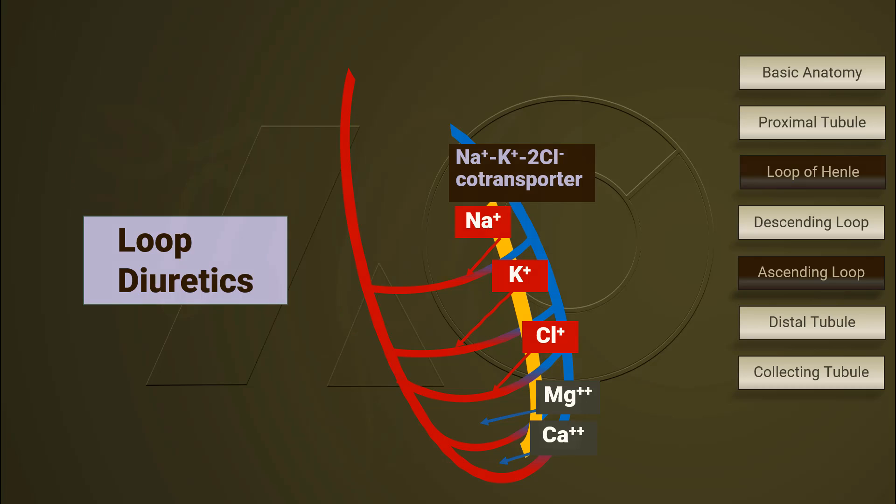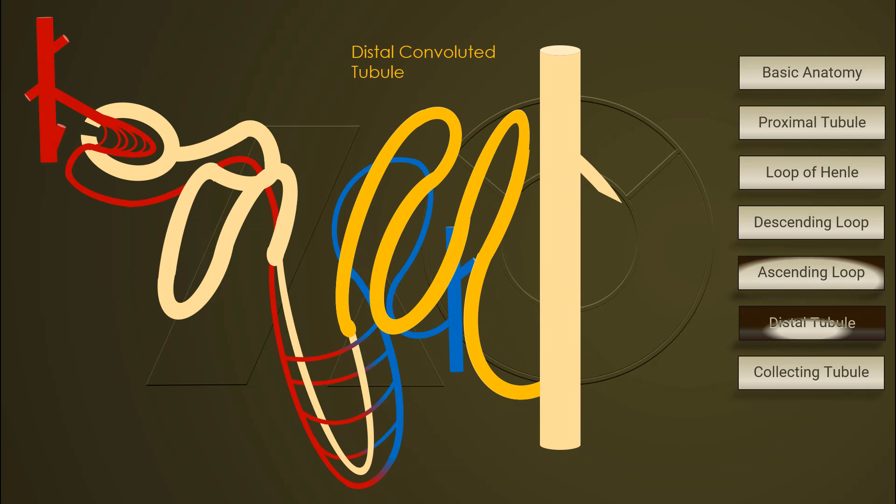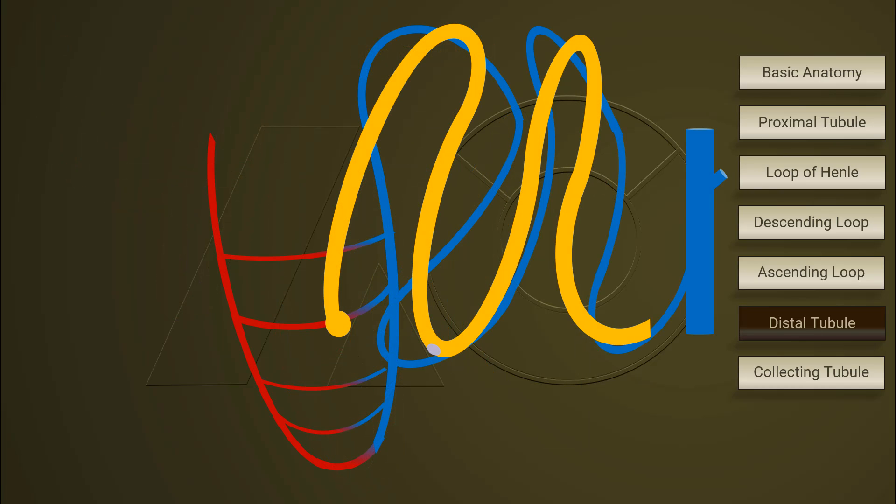The fourth segment in the nephron is the distal convoluted tubule. The luminal cells here is also impermeable to water. Reabsorption of sodium and calcium is continued here.